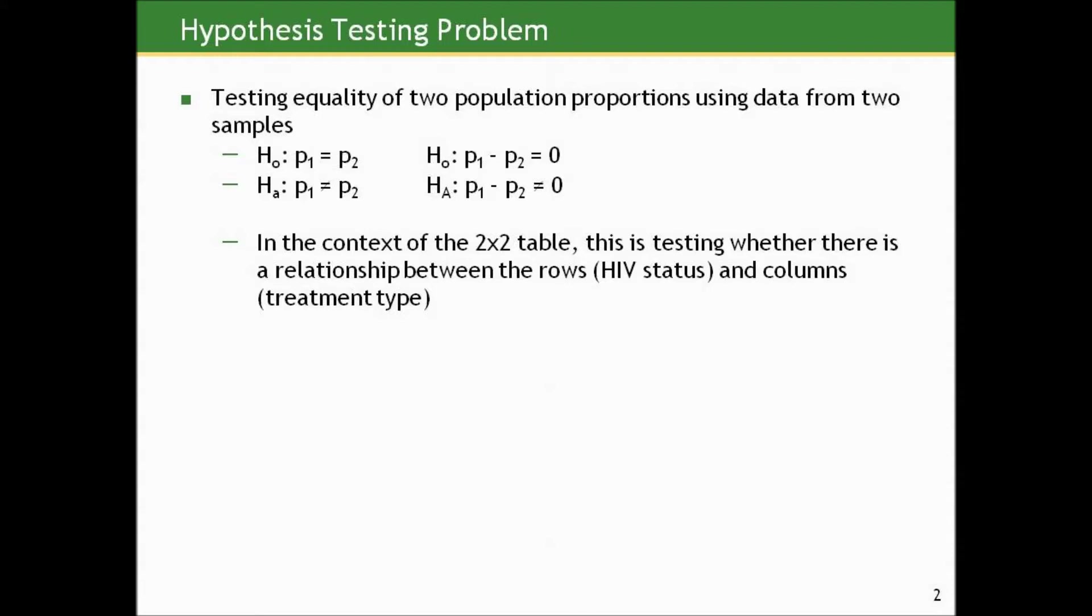From our hypothesis testing problem so far, we are speaking of testing the equality of two population proportions using data from two samples. The null hypothesis can be written as P1, the underlying true proportion in population 1, is equal to P2, the underlying true proportion in population 2, and the alternative that those two proportions at the population level are not equal. This can also be written in terms of the difference of proportions that P1 minus P2 equals zero. That's equivalent to saying P1 equals P2. In the context of a two-by-two table, we are testing whether there's a relationship between the rows and columns in the table.